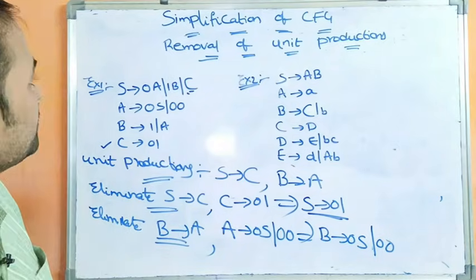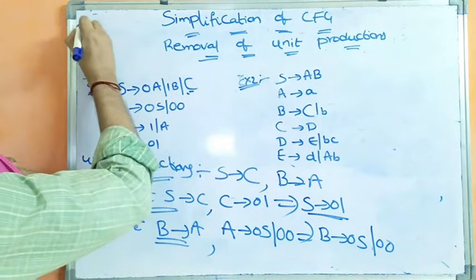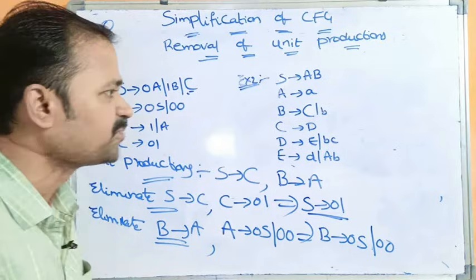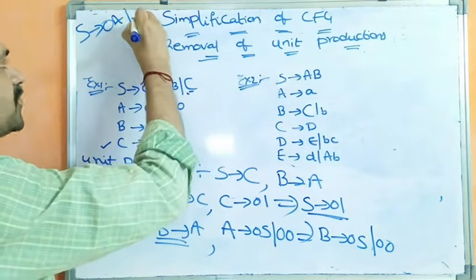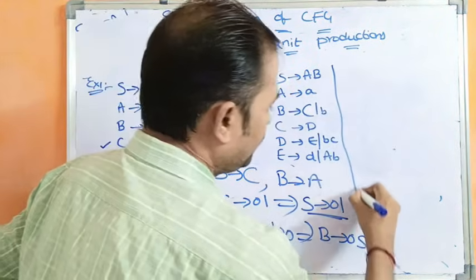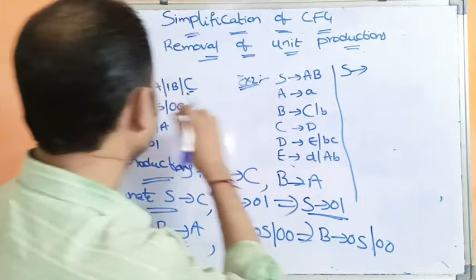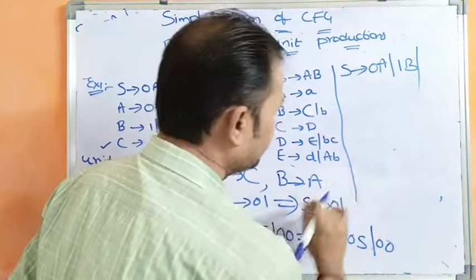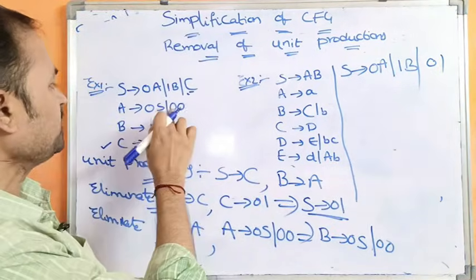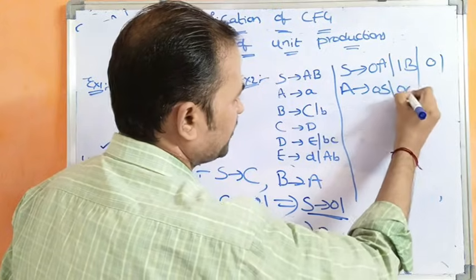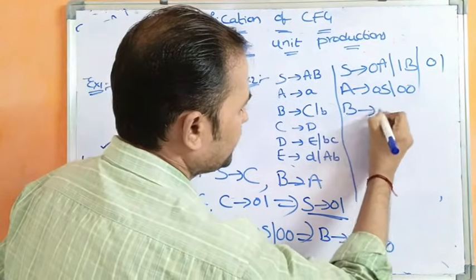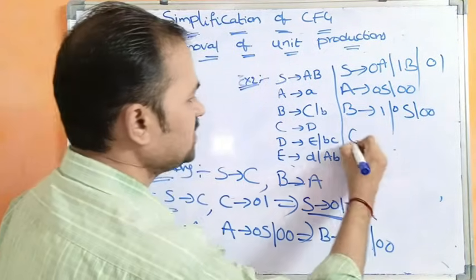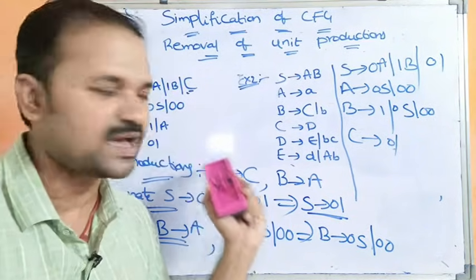After eliminating unit productions, the final grammar is: S produces 0A or 1B or 01 (where C has been replaced by 01). A produces 0A or 00 — there is no unit production here. B produces 1 or 0A or 00 (where A has been replaced with its productions). C produces 01. This is the final grammar after eliminating all unit productions from example one.